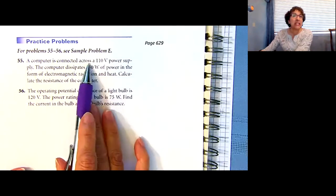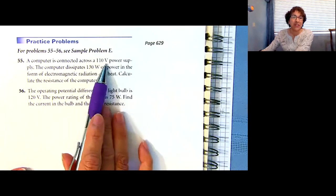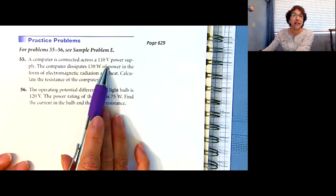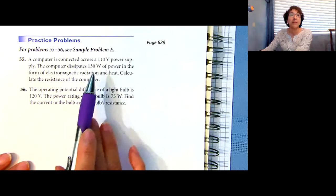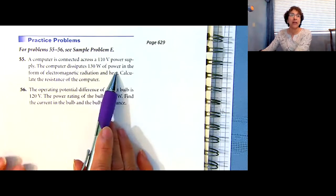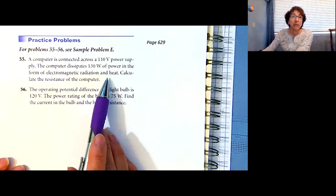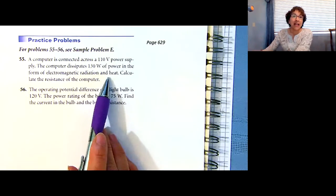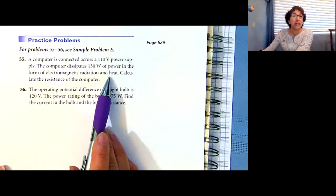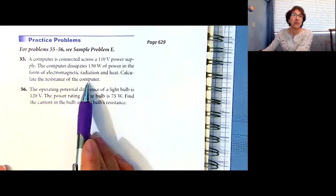There's two problems on page 629, number 55 and 56. A computer is connected across a 110-volt power supply. The computer dissipates 130 watts of power in the form of electromagnetic radiation and heat.